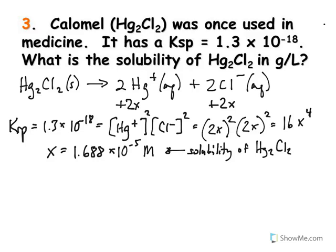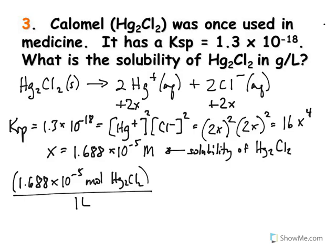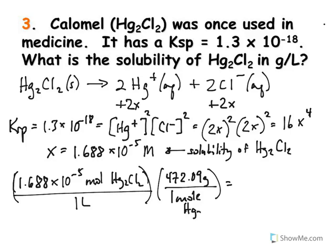We want to find the solubility in terms of grams per liter, which is what the question is asking. Since molarity equals moles of mercuric chloride per liter of solution, we multiply by its molecular weight — 472.09 grams of mercuric chloride per mole. The moles cancel out, giving us a final answer of 7.97 times 10 to the minus 3 grams per liter.